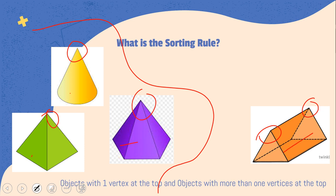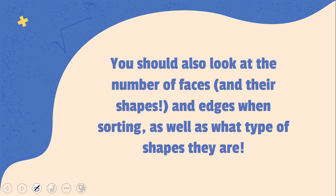So, you could actually sort them based on four-sided faces, or not four-sided faces, or the number of faces, or the number of edges, or if one was a cube, and one was a square-based pyramid, then you could put the squares together.